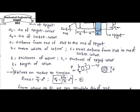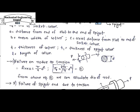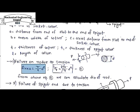To design a cotter joint we need to consider the failure of each section. First we design the rod for tensile failure. If we apply tensile force P, the rod of diameter small d will fail at its cross-section. The resisting area will be pi/4 times d squared. Tensile stress sigma_t equals load P divided by resisting area pi/4 d squared. This is equation A.